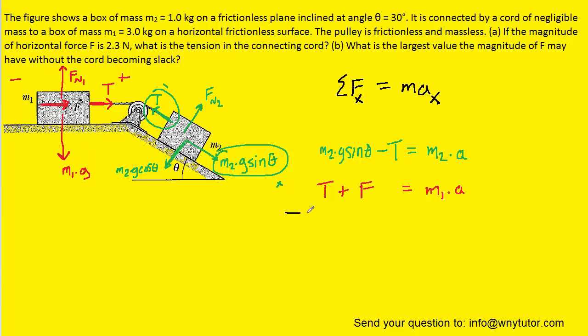Now we're trying to solve for the acceleration, and it turns out that we can actually add these two equations together. So on the left-hand side, we'll be adding this term as well as these terms here. So we would have M2 g sin theta minus T plus T plus F equals M2 times a plus M1 times a.